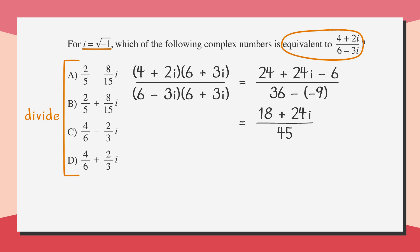But this doesn't look like any of the answer choices yet. That's because we need to convert it to complex number form. 18 over 45 plus 24 over 45i, which we can reduce down to 2 over 5 plus 8 over 15i. And look at that. Answer choice B.